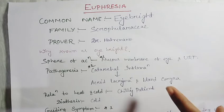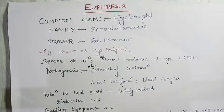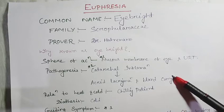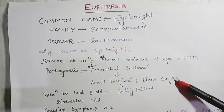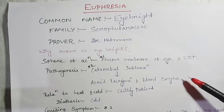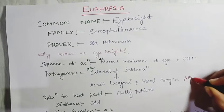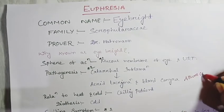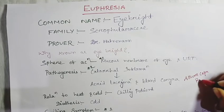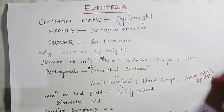This leads to acrid lacrimation and bland coryza. Acrid lacrimation means there is a very offensive discharge from the eyes, whereas the coryza is bland - the water which flows from the nose is very bland. This is completely opposite of Allium cepa. In Allium cepa, the lacrimation is bland whereas the coryza is acrid.